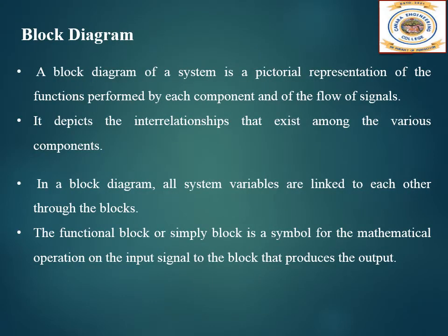A block diagram of a system is a pictorial representation of the functions performed by each component and of the flow of signals. It depicts the interrelationship that exists among the various components. In a block diagram all system variables are linked to each other through the blocks. The functional block is a symbol for the mathematical operation on the input signal to the block that produces the output.